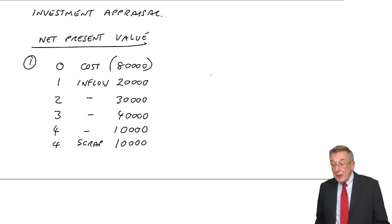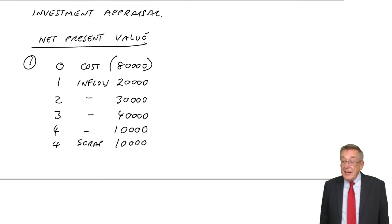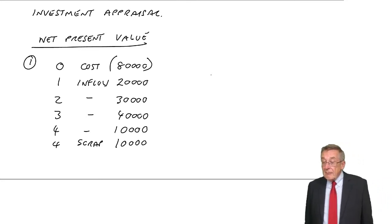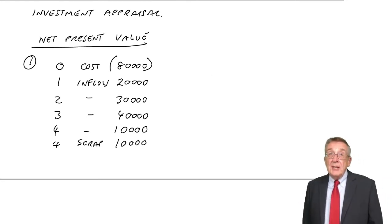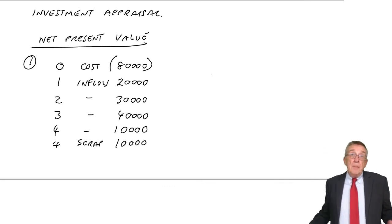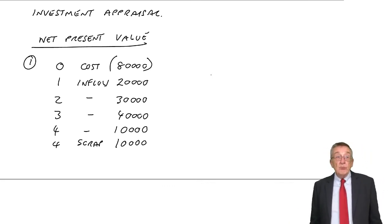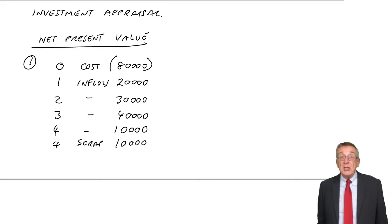And if it weren't for one problem, it'd be easy. Because to make the decision, we say, well, if we get more cash in than we pay, it's good and we'll buy the machine. If we get less cash in, it's bad.